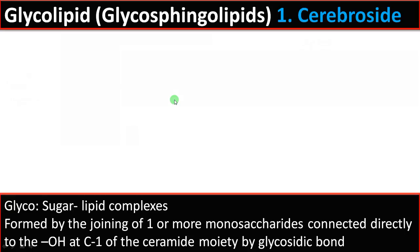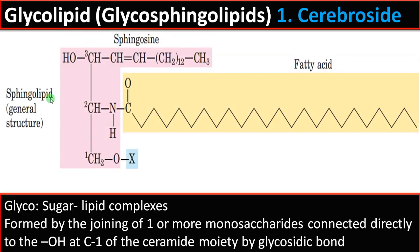Let's look into the structure of sphingolipid. As you can see, there is a sphingosine backbone in the case of glycolipid, whereas in fatty acids, glycerol forms the backbone. Then fatty acids are attached to the second carbon — attached to the nitrogen — by an amide bond, then to the first carbon.